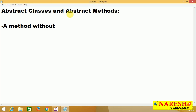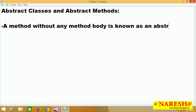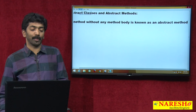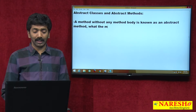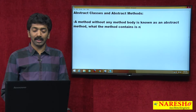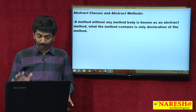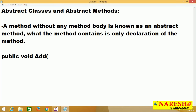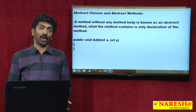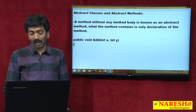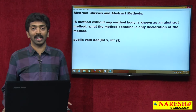What is an abstract method? A method without any method body is known as an abstract method. What the method contains is only the declaration of the method — there will not be any implementation at all, only declaration. Suppose if we want to write a method like 'public void add(int x, int y)', this is a non-abstract method — a method with a method body. But without writing any body, if I end this with a semicolon, this method is what we call an abstract method.